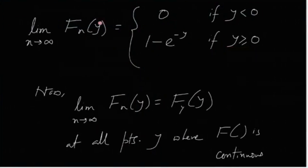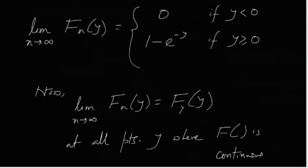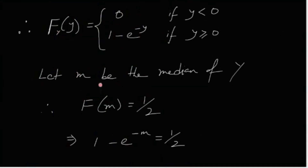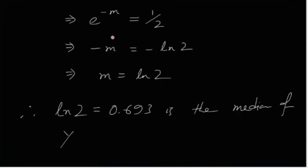Since Yn converges to Y in distribution, the limit of Fn(y) is F_Y(y). So the CDF of Y is 0 for y < 0 and 1 minus e^{-y} for y ≥ 0. This is the exponential distribution with mean 1. Let M be the median of Y, so F_Y(M) = 1/2, giving 1 minus e^{-M} = 1/2, which solves to M = ln 2 ≈ 0.693.